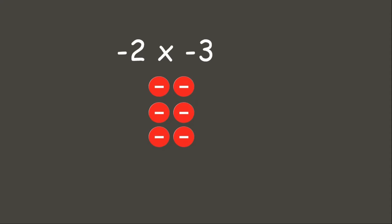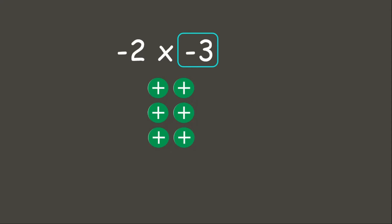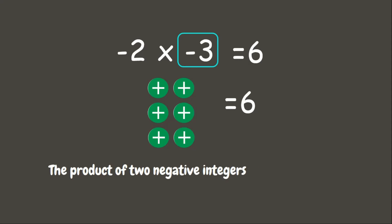Now, one thing that you need to remember: if the multiplier is a negative integer, this means that we need to get the opposite of our counters. The opposite sign of our counters, which are negatives, are positive. Therefore, our answer is positive 6. This means that when we are multiplying two negative integers, the answer is a positive integer.